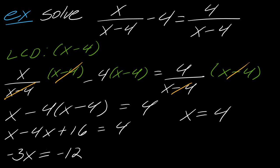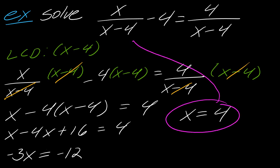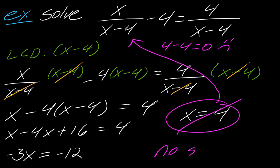So x equals 4 would be my solution. Am I done? No, my friends, we are not. Because I look at this and see that four minus four equals zero — that's a problem. So this solution does not work. In this case we would say there is no solution, or you could just put in the empty set, whichever you prefer. That's the strategy, and that's the thing you have to watch out for.